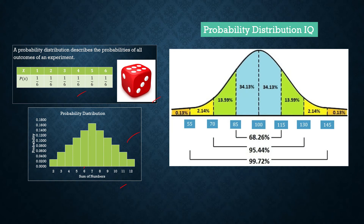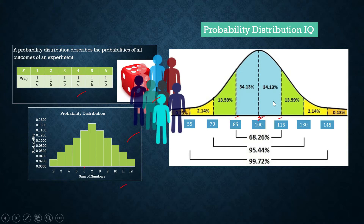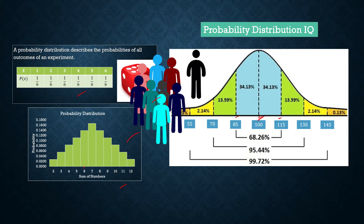The mean IQ is 100 points and the standard deviation is 15, as seen from the intervals on the curve. We have a population of adults, and we are interested to know: what is the probability that a randomly chosen person from this population would have an IQ between 130 and 145?